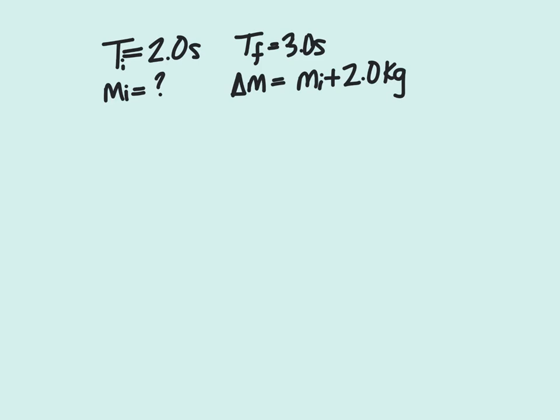The equation we're going to be using is T equals 2 pi divided by omega. And we need to remember that omega equals the square root of k divided by m.